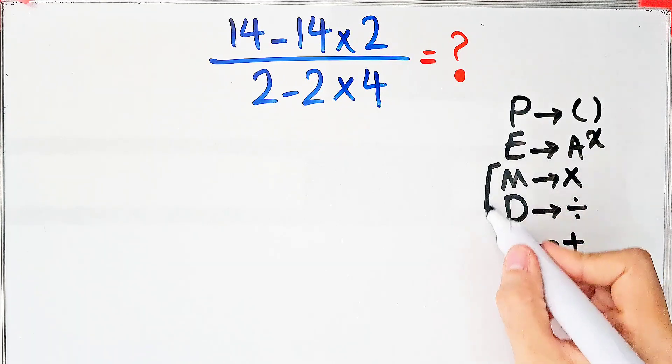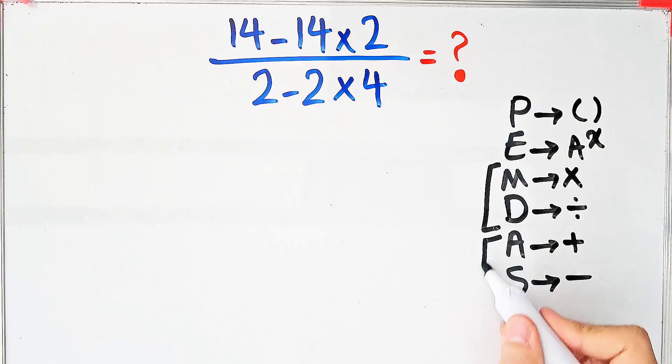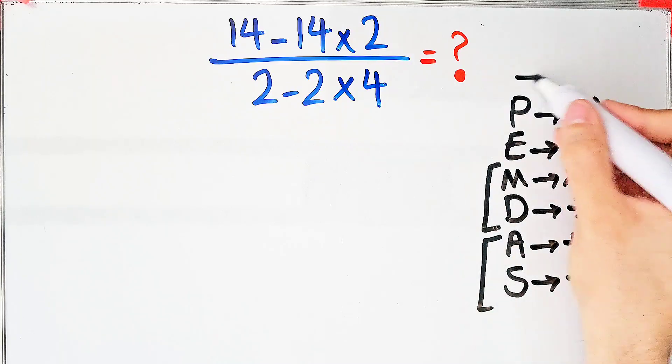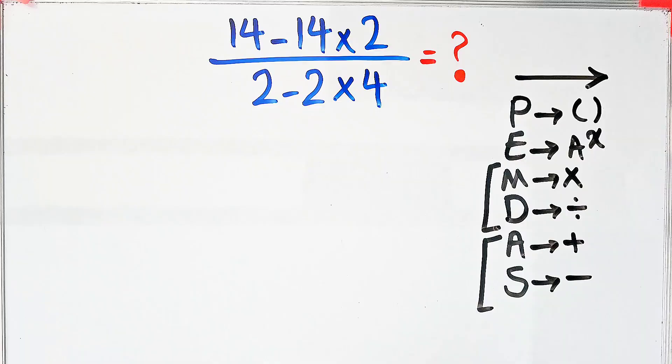Multiplication and division have the same level of priority. Also, addition and subtraction have the same priority. And when we have both in an expression, we start from the left and simplify the question.